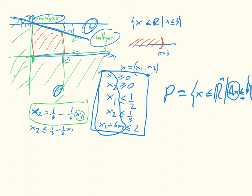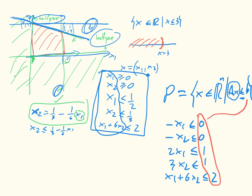And we just have to do a little bit of work to flip the inequalities in the right way. So we get that it's minus x1 less than or equal to 0, minus x2 less than or equal to 0, 2x1 less than or equal to 1, 3x2 less than or equal to 1, and x1 plus 6x2 is less than or equal to 2. So this is, in essence, b.